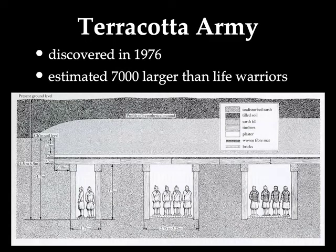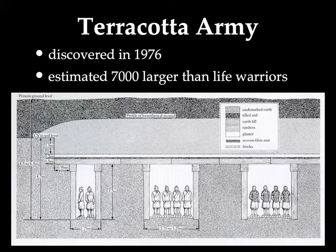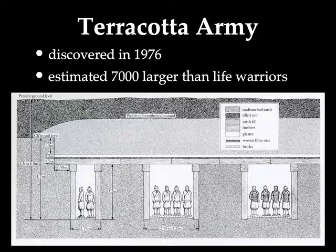Another major project undertaken by Emperor Qin Shi Huangdi was his burial ground, which was created and formed by a massive terracotta army buried deep underground. This terracotta army, which is part of his burial tomb, was discovered in 1976 quite by accident. As some villagers were digging a well, they discovered a ceramic head. It was not until the 1980s that serious archaeological digs began, and then they realized they had uncovered this massive tomb.